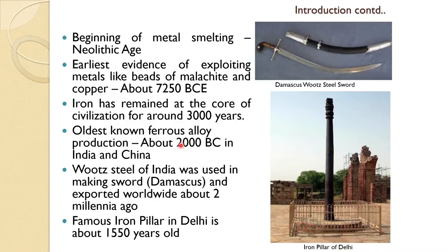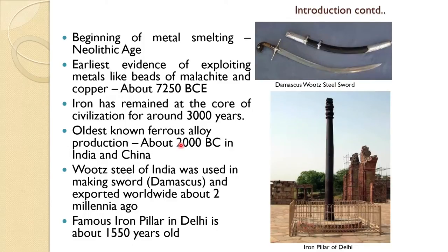The beginning of metal use started in the neolithic age. Earlier evidence of exploiting metals, like veins of malachite and copper, dates to about 7250 BC. The iron age came quite late — first the stone age, then the copper age, then bronze, and then the iron age.